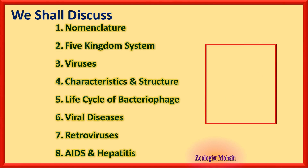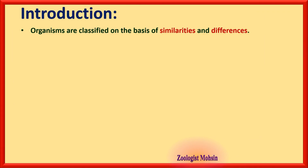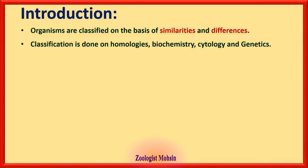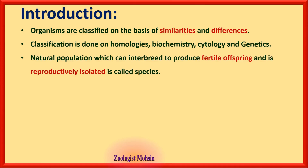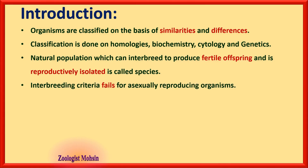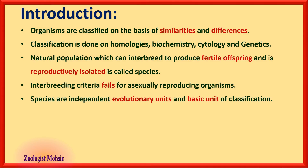Organisms are classified on the basis of similarities and differences — that is the basis for classification. Classification is done on homologies, biochemistry, cytology, and genetics, which is the modern approach. A natural population which can interbreed to produce fertile offspring and is reproductively isolated is called a species. Fertile offspring are those which can further reproduce. The interbreeding criteria fails for asexually reproducing organisms such as those that reproduce by binary fission. Species are independent evolutionary units and the basic units of classification.